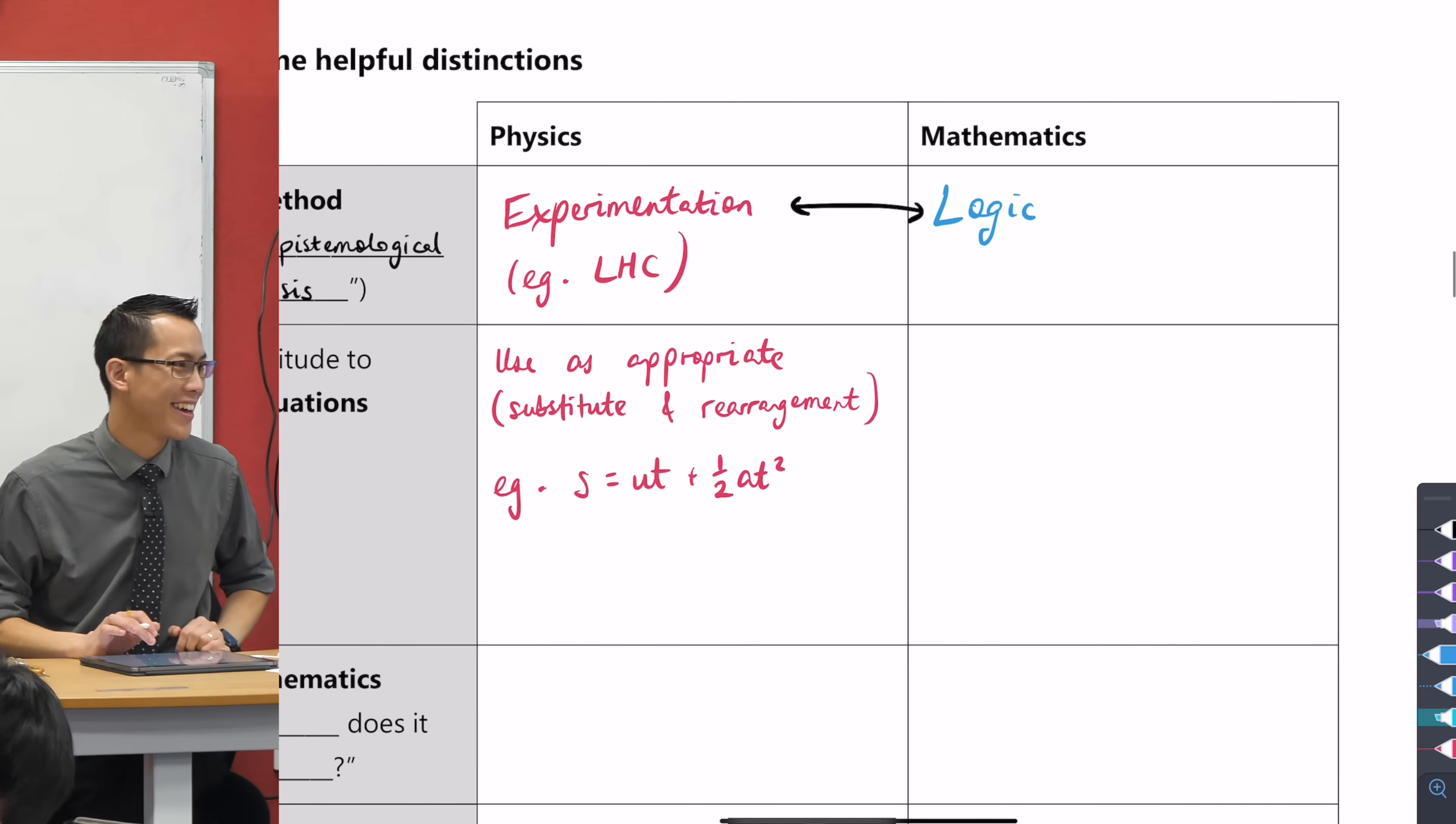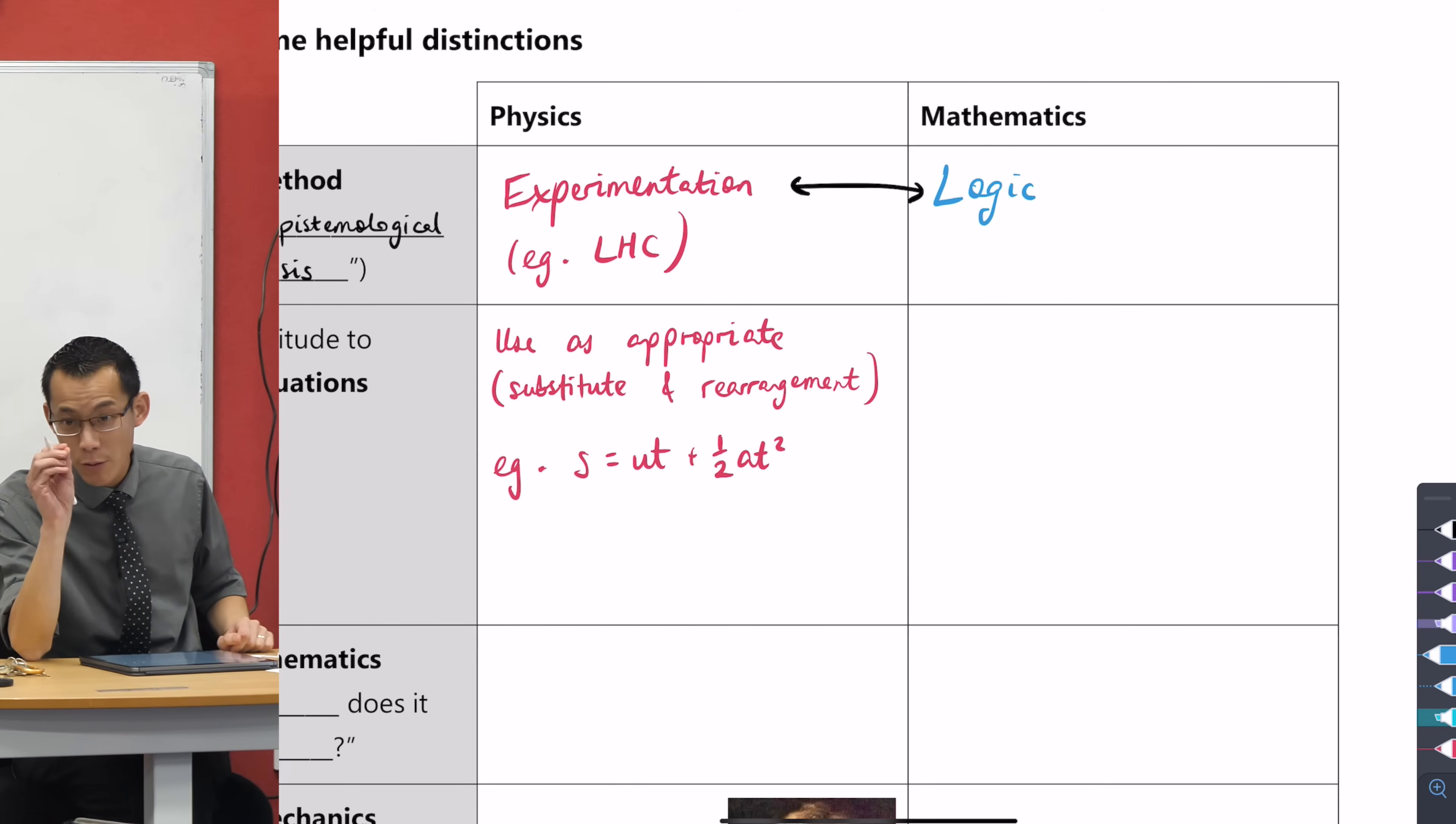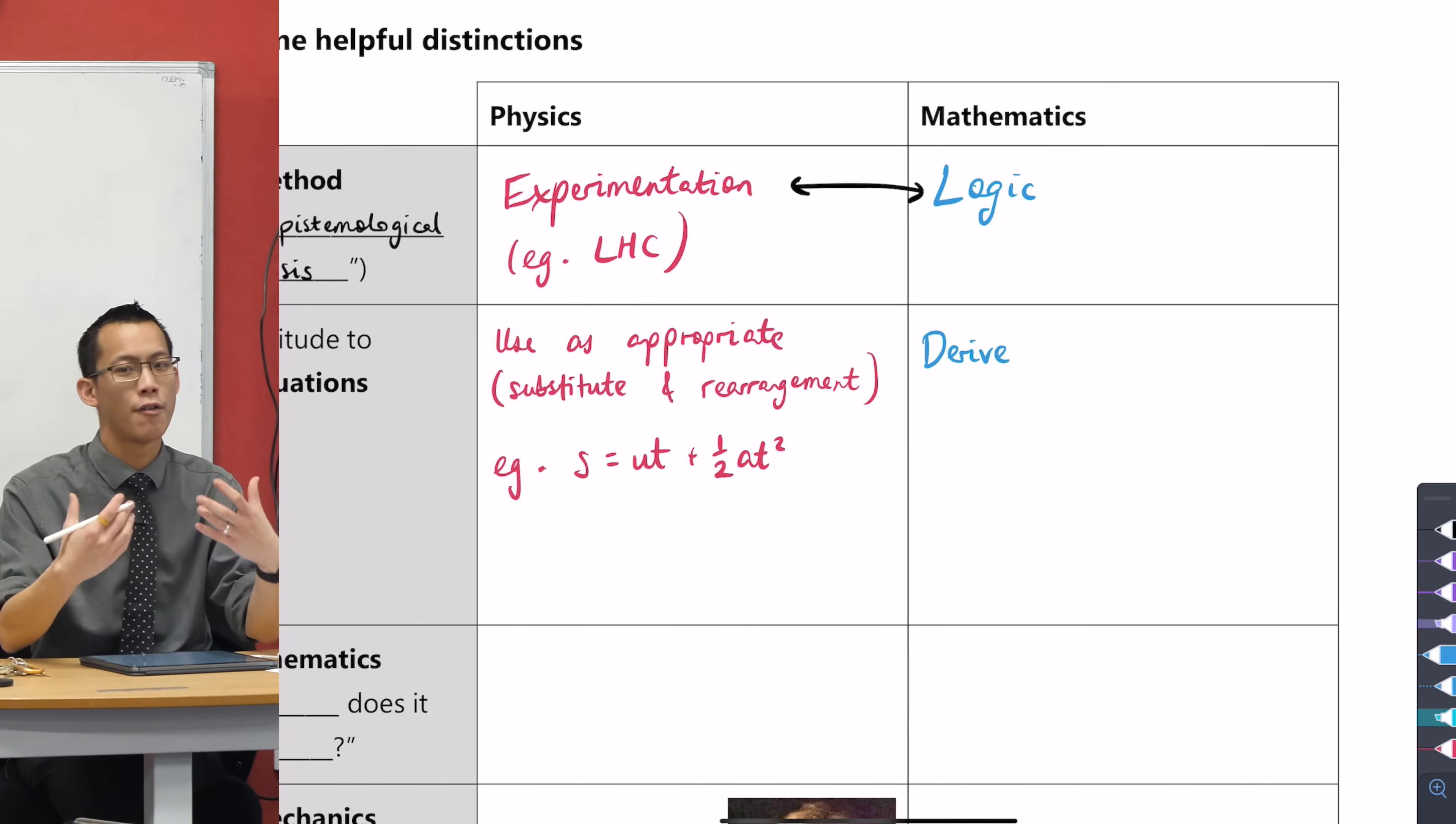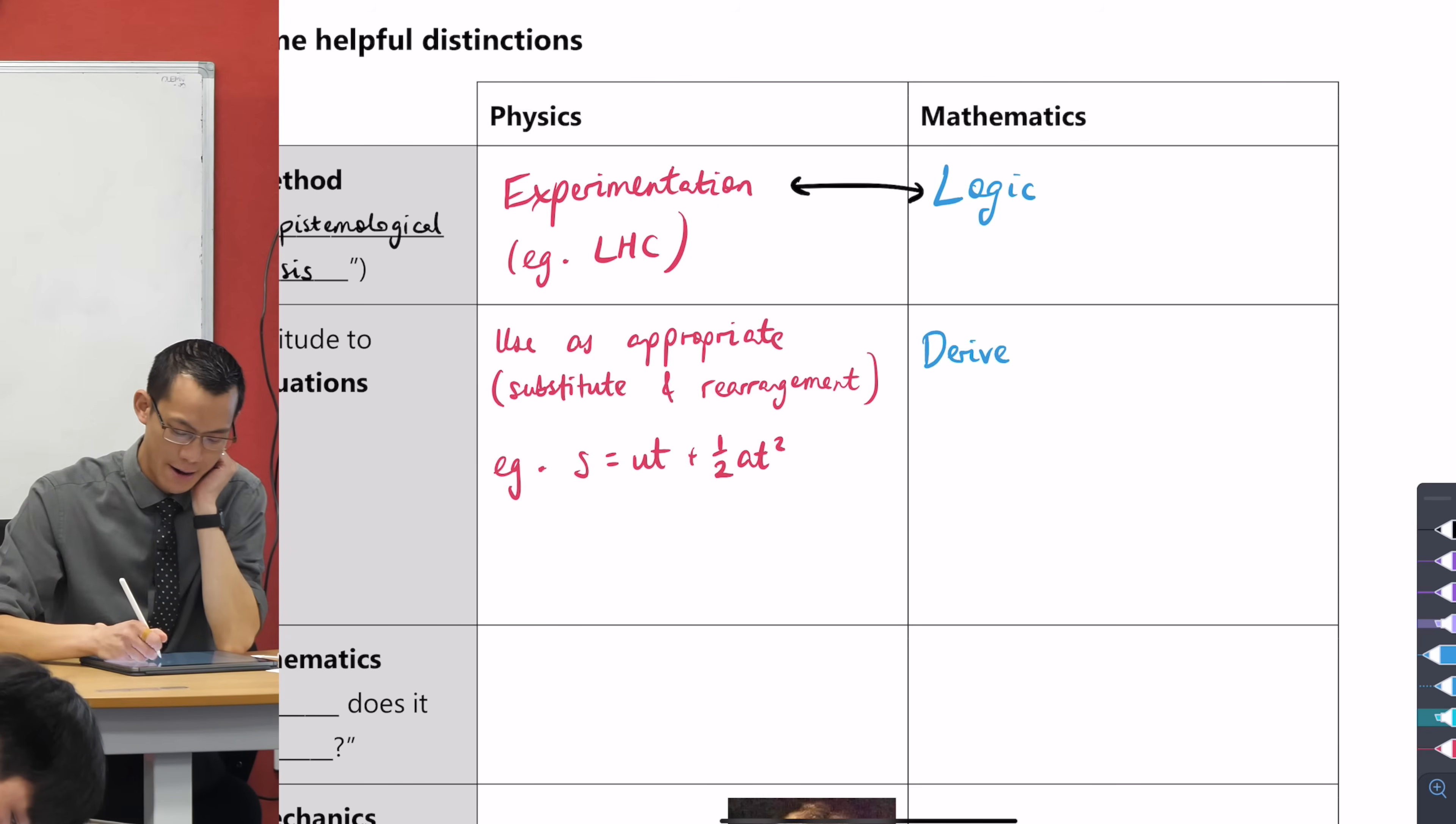But that rather doesn't cut it in mathematics. For every equation that you're going to use, you need to be able to get where that comes from from first principles. We have a name for that. We call it deriving. Not to be confused with differentiation. I'm talking about getting something from its theoretical basis. So we would call that from first principles.